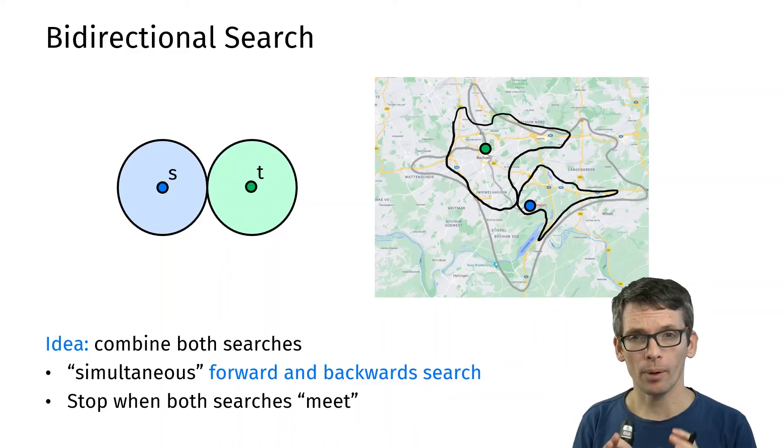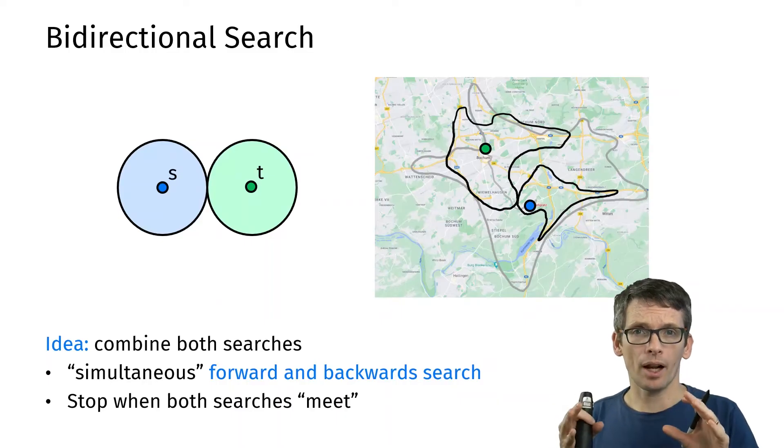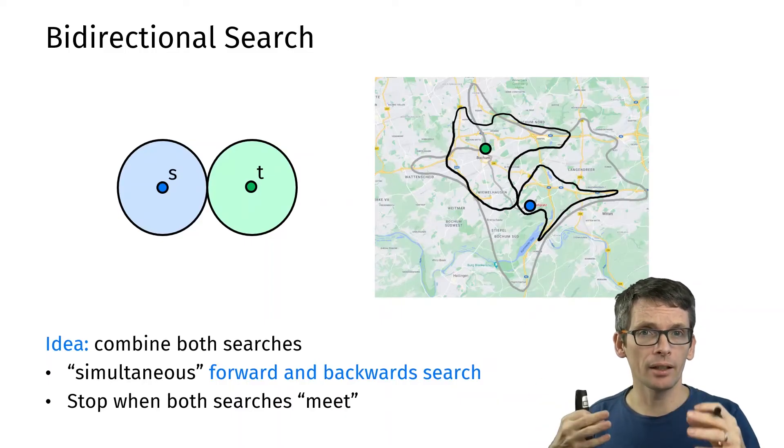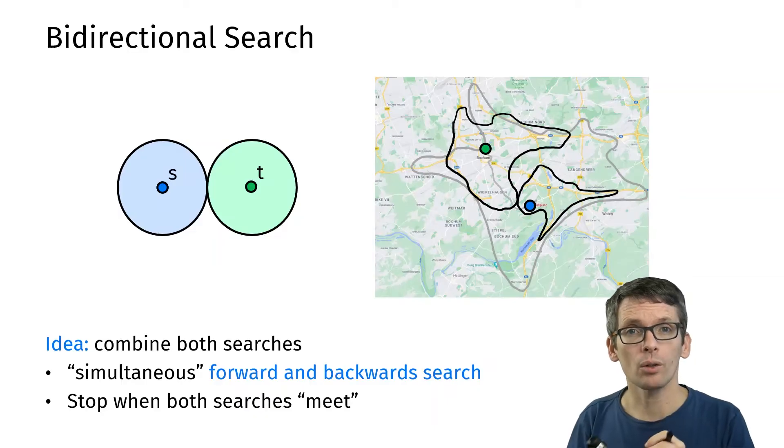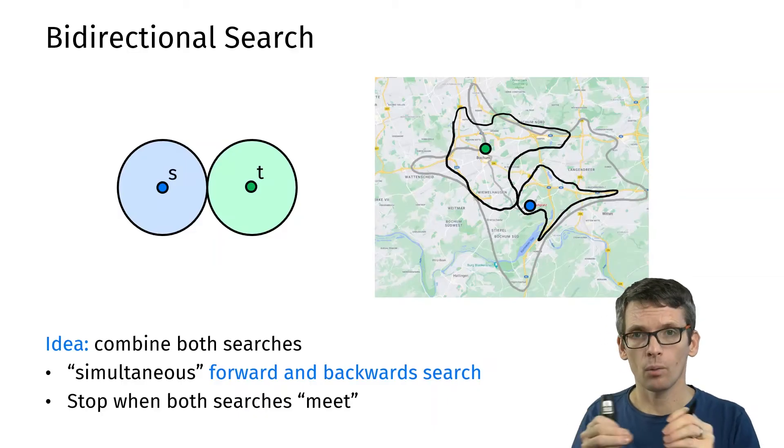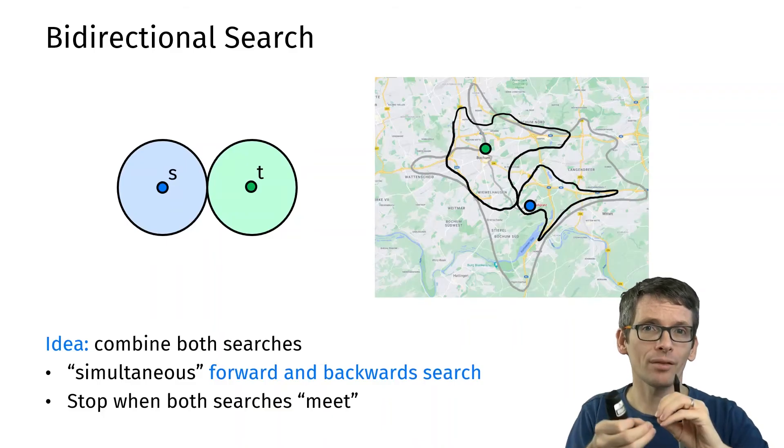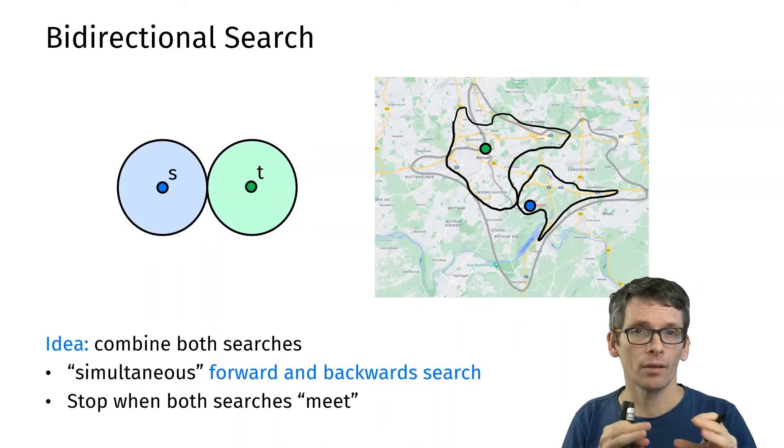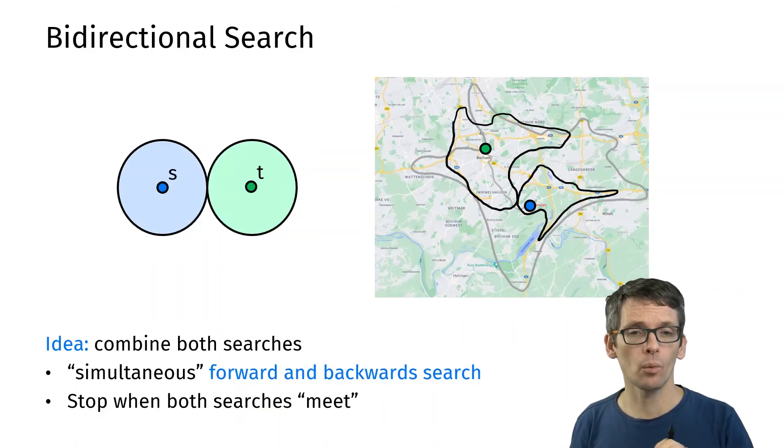There are some things here where we have to be careful about. For instance what does it mean that we run the algorithm simultaneously? Are we running them in parallel or are we alternating running one and the other for a step? Then also what does it mean when they meet? When two regions meet or if they find the same node, we still need to be careful that we compute the shortest path correctly. But that can be done.